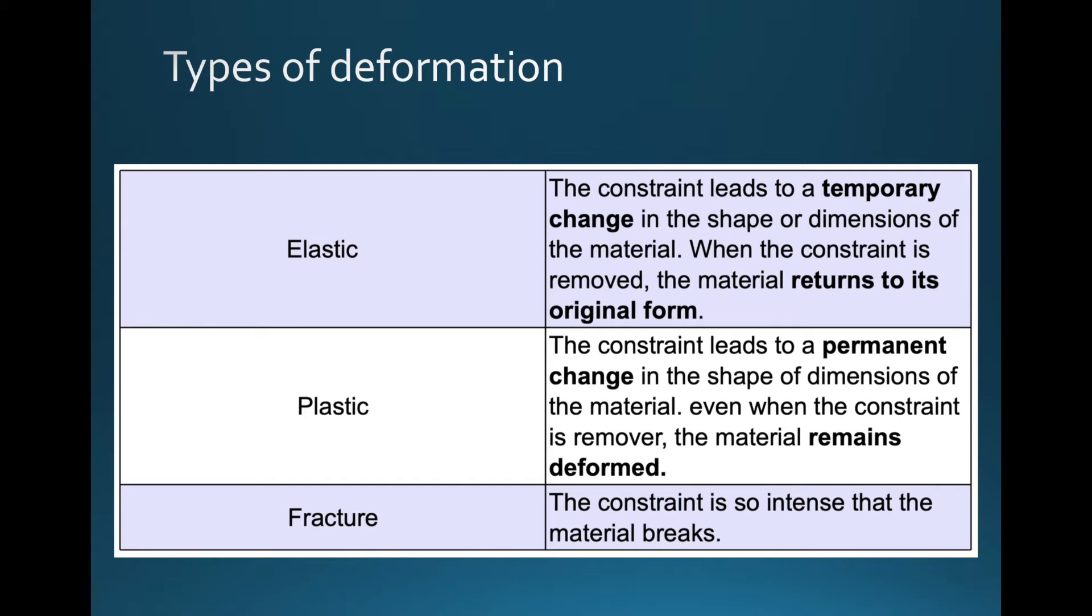Then we have plastic deformation, which leads to a permanent change in the shape and dimensions of the material. Even if the constraint is removed, the material is permanently changed, permanently deformed. If you think of play-doh, play-doh is very plastic. You can press on it and make different shapes out of it, but if you let go of the play-doh, it's not going to be like an elastic. It's not going to go back to the shape it had before. It's permanently changed.